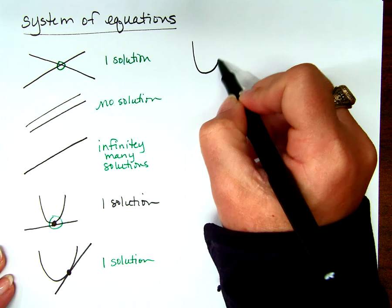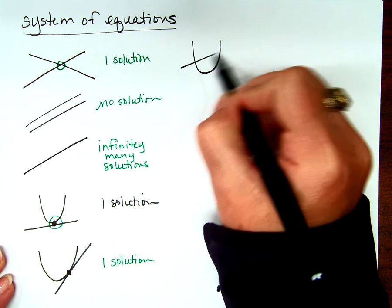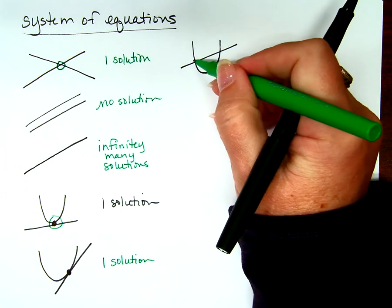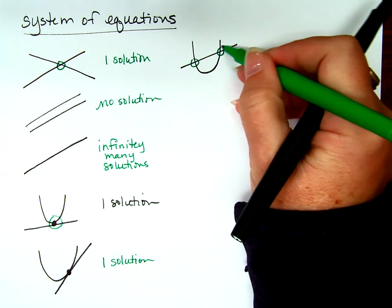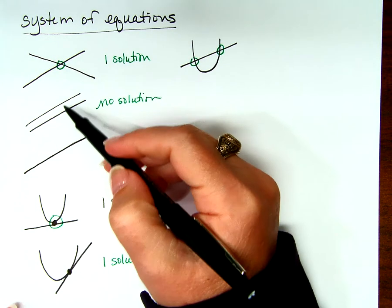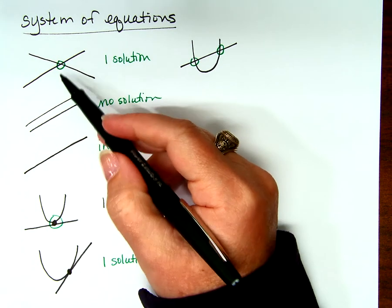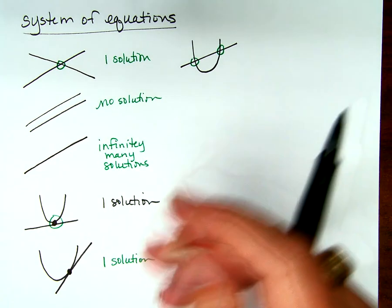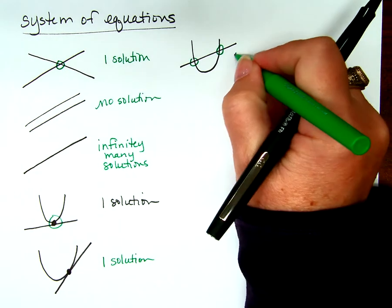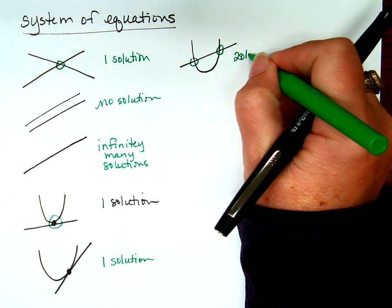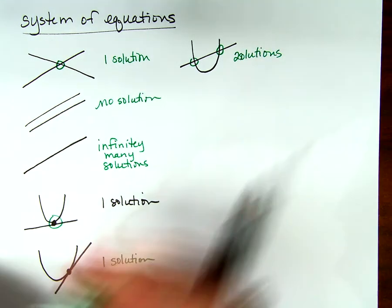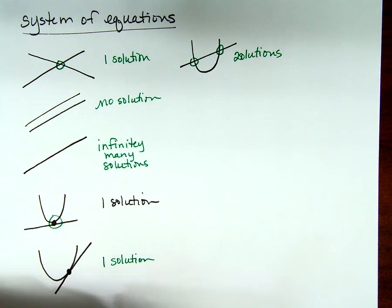So we have a parabola and our line could go like that. How many solutions is that? That's different than before, right? With just lines, can it cross in two places? No way. Two solutions.